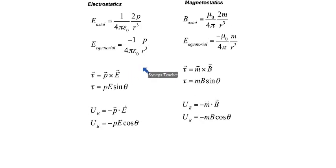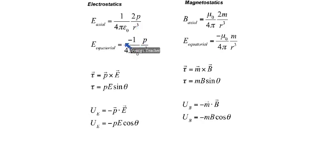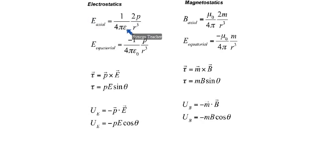One more thing to observe: the magnitude of the axial electric field is equal to 2 times the magnitude of the equatorial electric field — if you multiply the equatorial equation by 2, its magnitude equals the axial electric field. Similarly, the magnitude of the axial magnetic field is equal to 2 times the magnitude of the equatorial magnetic field.